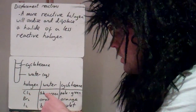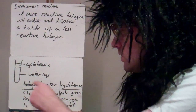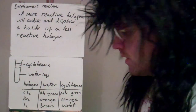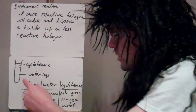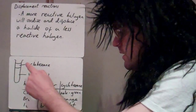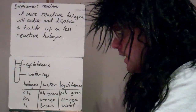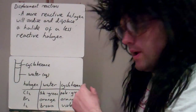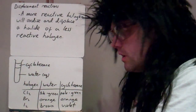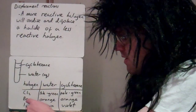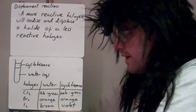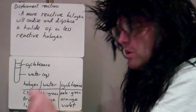Chlorine in solution has a pale green colour in the aqueous layer, and in the cyclohexane it's also pale green. Bromine is orange in water and orange in cyclohexane. Iodine is brown in water and violet in cyclohexane. The reason we use cyclohexane is that it doesn't take part in the reaction — it dissolves these non-polar substances and shows us slightly different colours to what we see in the water.